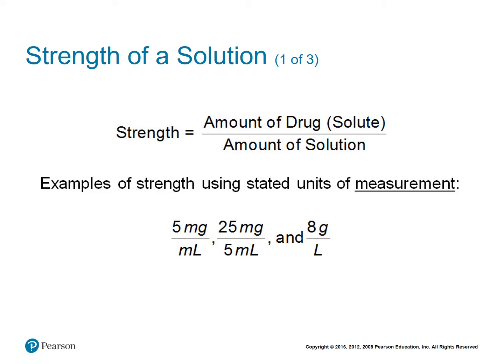Some examples of strengths might be 5 milligrams per milliliter, meaning you have 5 milligrams of your pure drug for every 1 milliliter of solution. Another example: you would have 25 milligrams of your pure drug for every 5 milliliters of solution.